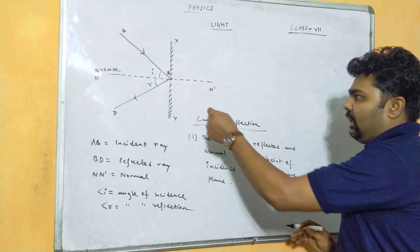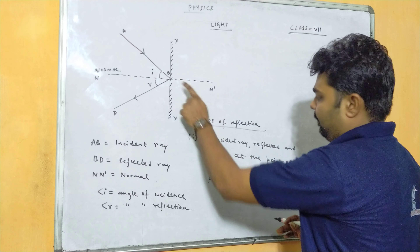The incident ray, the reflected ray, and the normal at the point of incidence all lie in the same plane — that means they are lying in the same 2D plane. The second law says that the angle of incidence must be equal to the angle of reflection. These are the two laws of reflection.